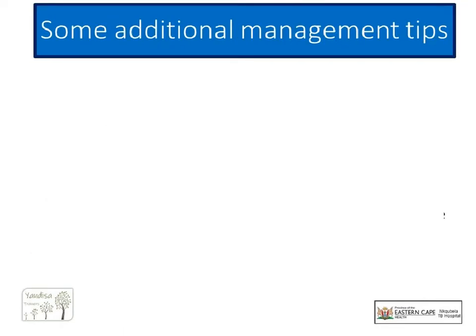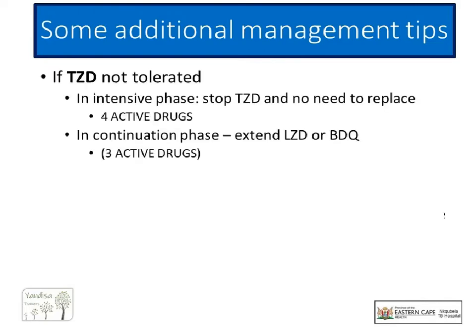Since we have fewer drugs in the long regimen, we must substitute appropriately if any are not usable. Terizidone is not a very important drug in the intensive phase and plays a bigger role in the continuation phase. If in the intensive phase you are unable to tolerate terizidone, it can actually be omitted without concern as long as you are sure the other four drugs are all active. It is a bit more tricky in the continuation phase as we only have three active drugs — if you have to omit terizidone during the last year, you will extend linezolid or bedaquiline to give the regimen extra support.